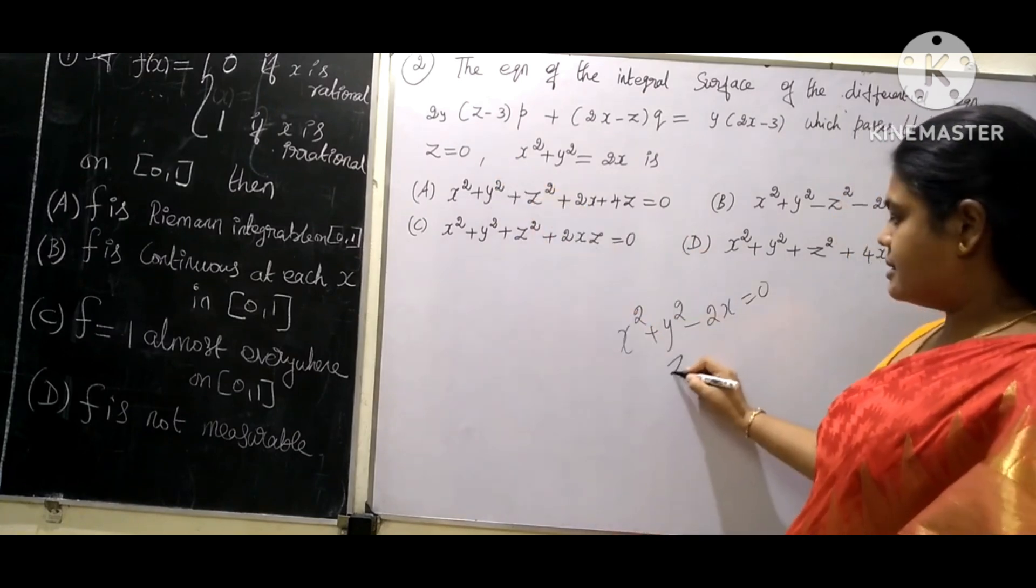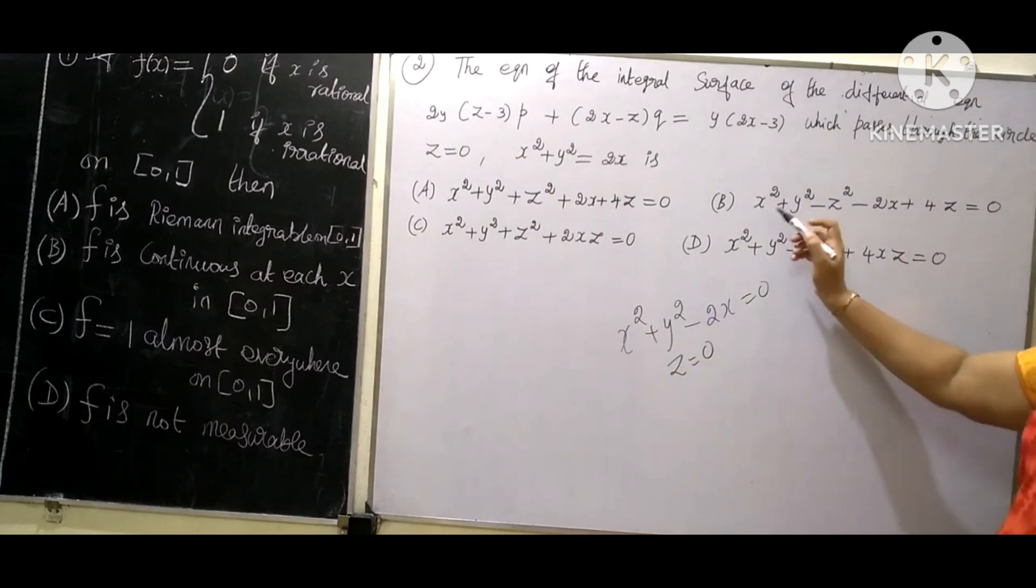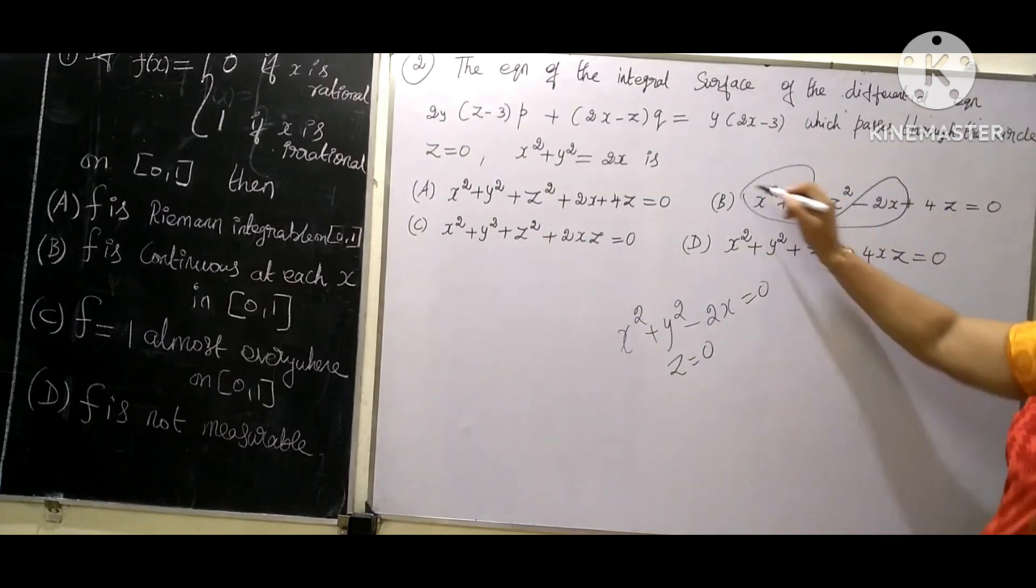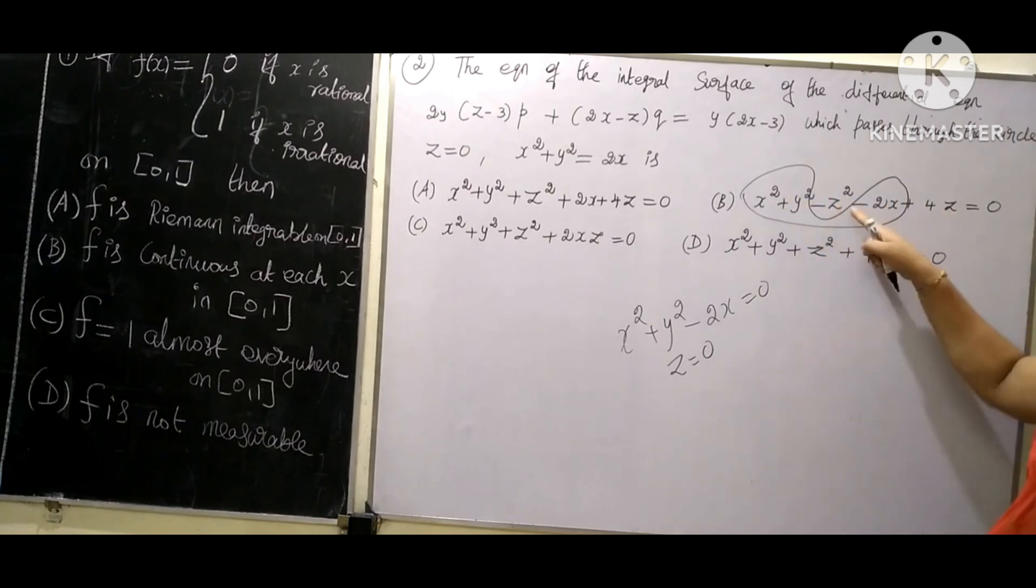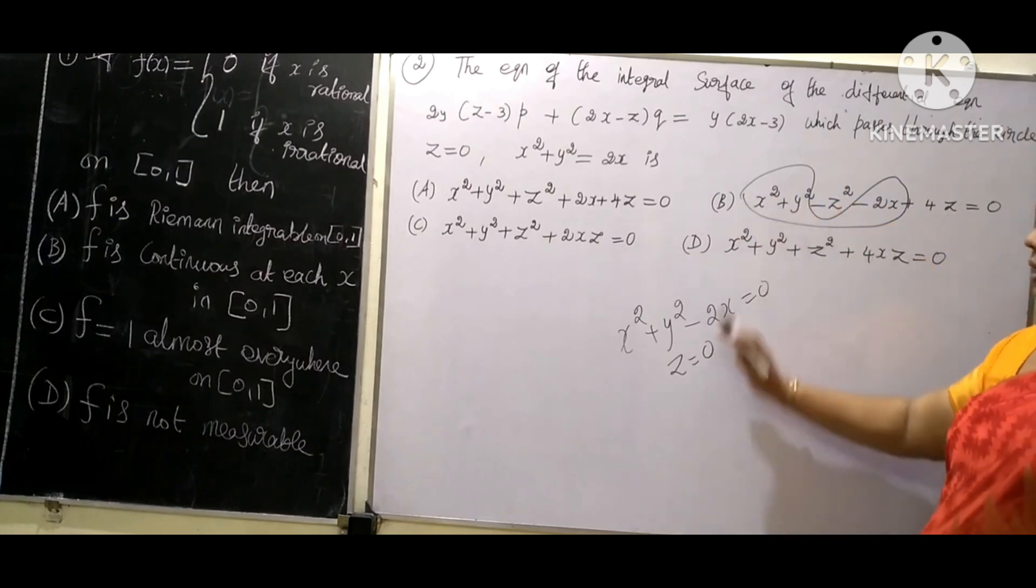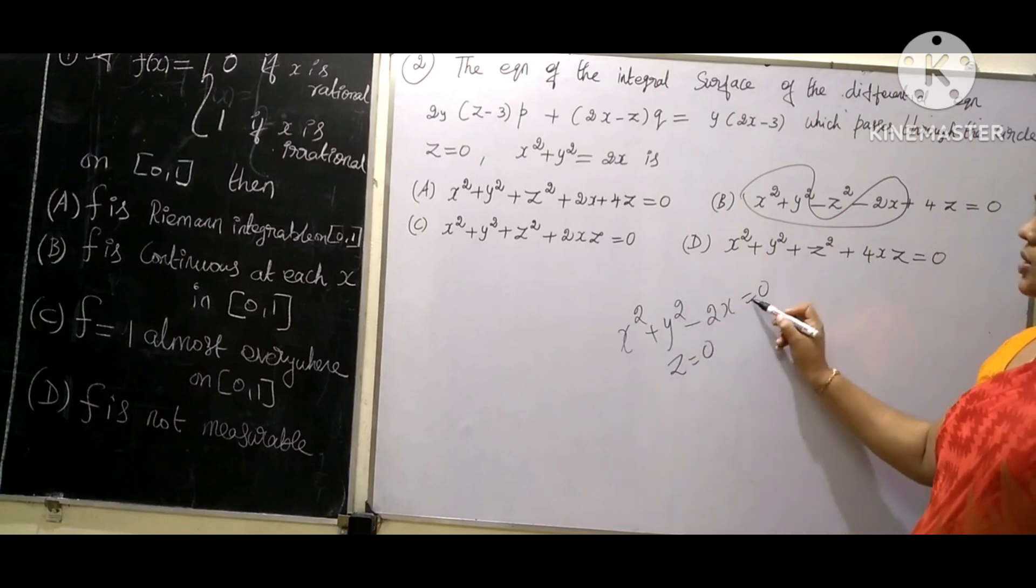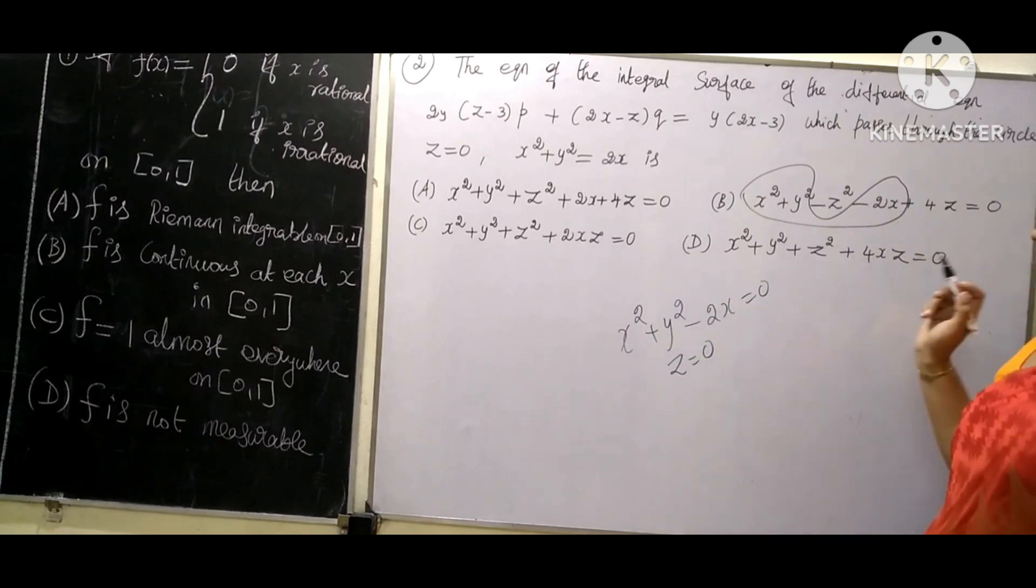Another condition is z = 0. If we check the options, x² + y² - 2x = 0 and z = 0 substitute in option b correct. It is satisfied.